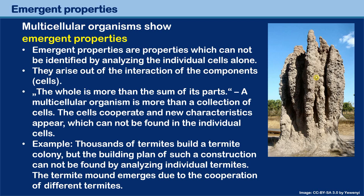On the biochemical level, what goes on inside cells is well understood. But how many of these cells cooperate to make an organism that works together and is able to do things the individual cells were not able to do before — that is much more difficult to understand. These characteristics are referred to as emergent properties.